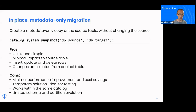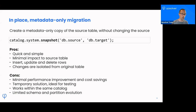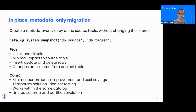The pros of that are that it's quick, simple, and not a lot of work — one command, pretty quick, minimal impact on the source table. It just creates metadata and points to the old data. You can insert and delete rows into the new table, though only on the new table. Data changes are isolated from the original table, so anything you're doing is inside a single isolated snapshot on your Iceberg table where the old data is basically isolated away.